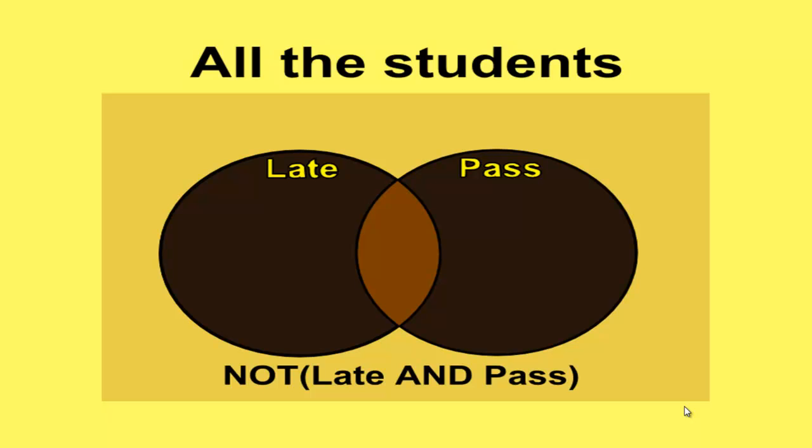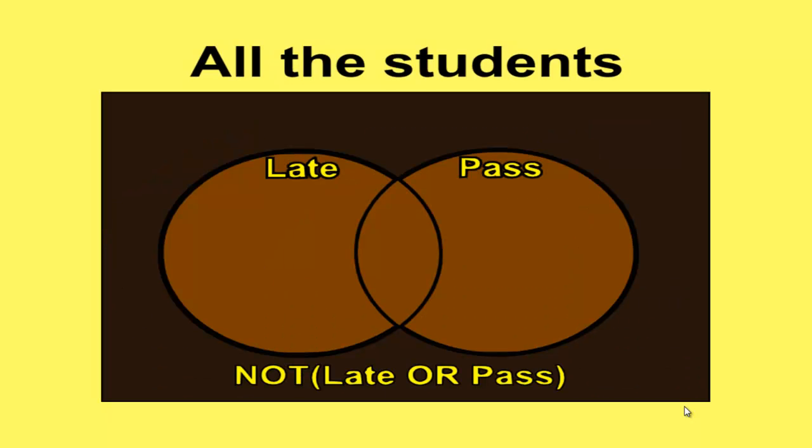The final diagram will show you those who are NOT late or pass. If you remember back to the diagram on the OR, we had late or pass being the shaded area in the middle. By making it NOT, we're looking at all the others. So these are the people who fail but turn up on time.